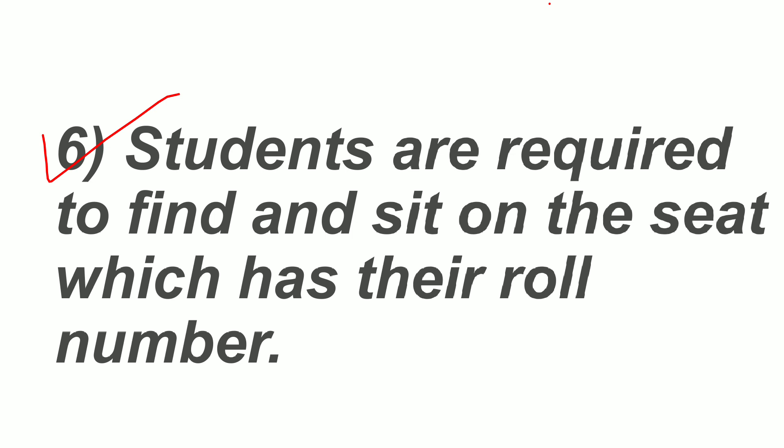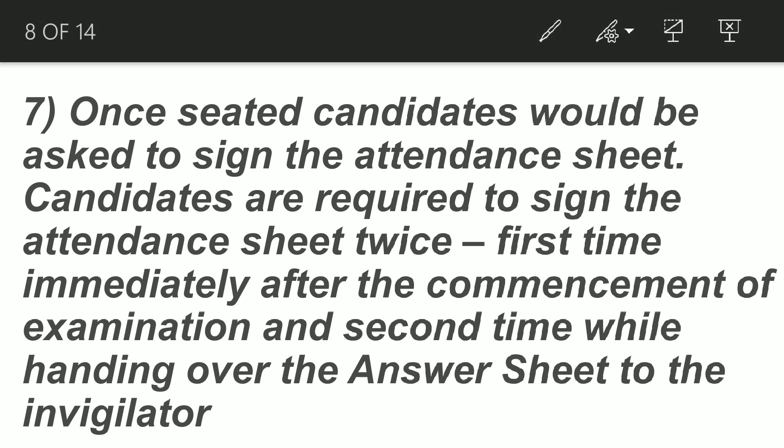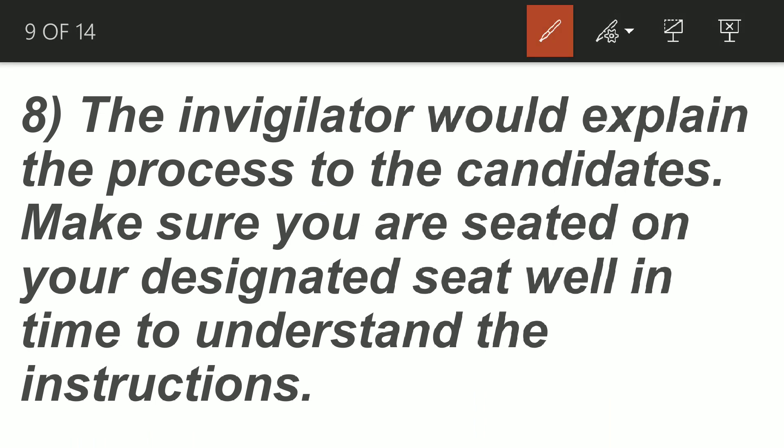After sitting down, the invigilator in your examination room will bring an attendance sheet for you to sign. You will sign once when you are seated. Then you will sign a second time when you submit your answer sheet to the invigilator. You will also provide your thumb impression on the attendance sheet.